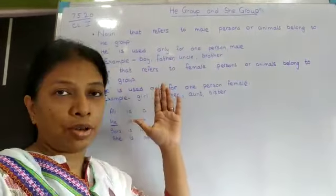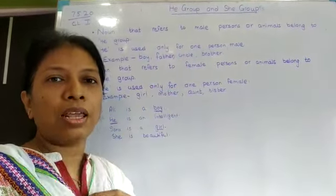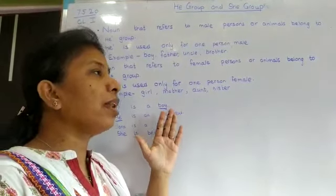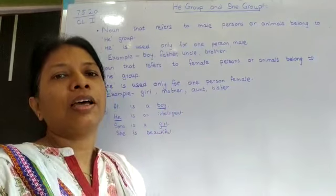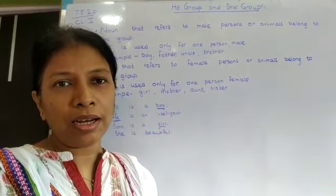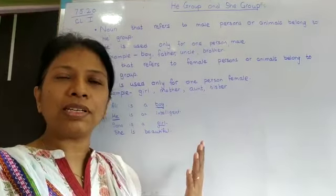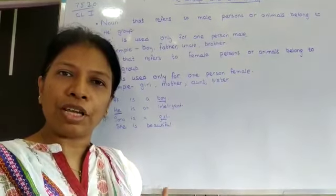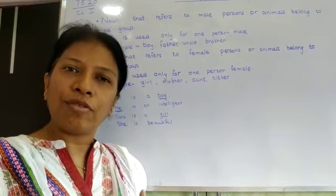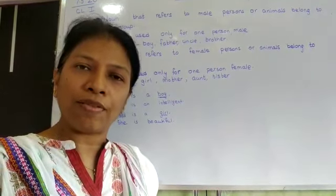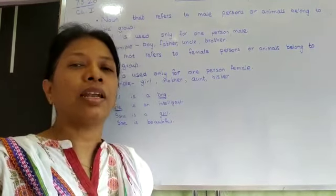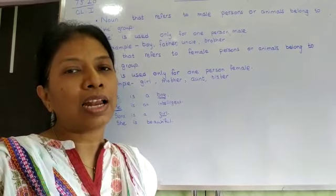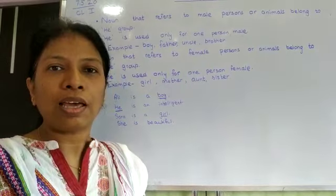Children, we have done he group and she group. Kindly read from your chapter as well and relate it with my video. I hope you will understand better. We will proceed to the different groups. I will give you the names we read today, plus a few more than what you have in the books — that we will do in the next video. We also have to do the exercises and revision, which we will keep doing in our next videos. Thank you, children.